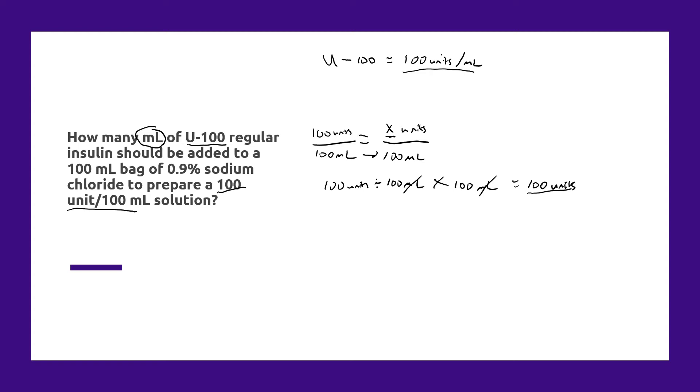And again, we know this is 1 mL. But the actual math behind this would now be how many milliliters are there per 100 units when our known conversion is 1 milliliter has 100 units.